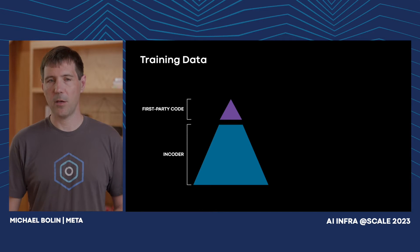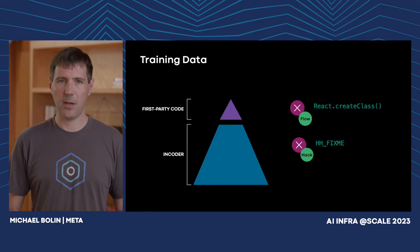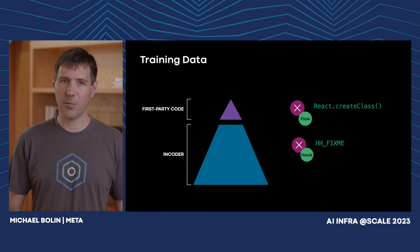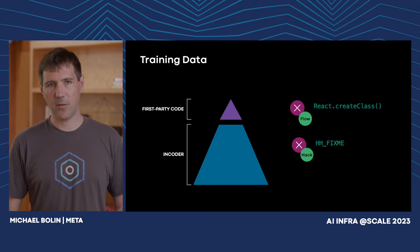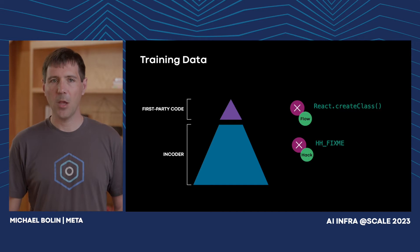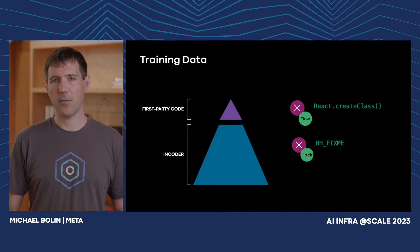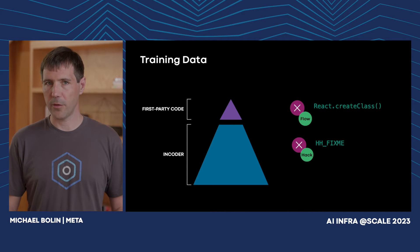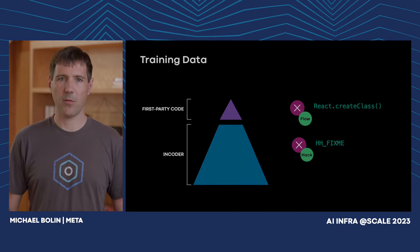Further, in curating the code used for fine-tuning, we exclude files that contain patterns we want to discourage, such as deprecated APIs like React Create Class and Flow, or code containing errors suppressed via an HFixMe annotation in Hack. We also supplement our training data with code that does not live in source control, such as Jupyter Notebooks. The net result of these investments in training data have yielded impressive results.